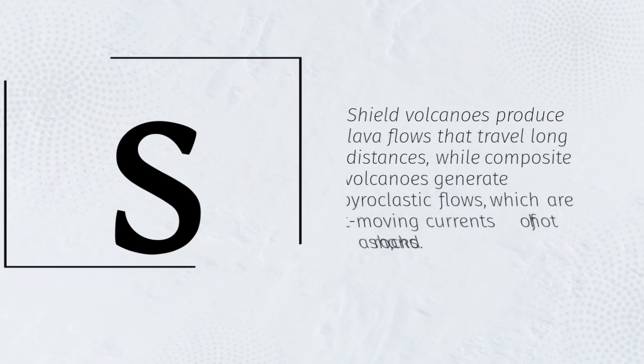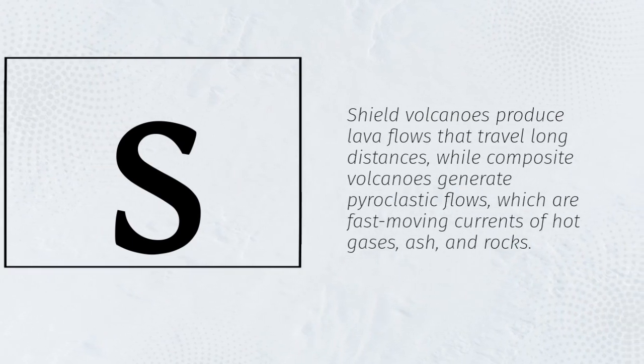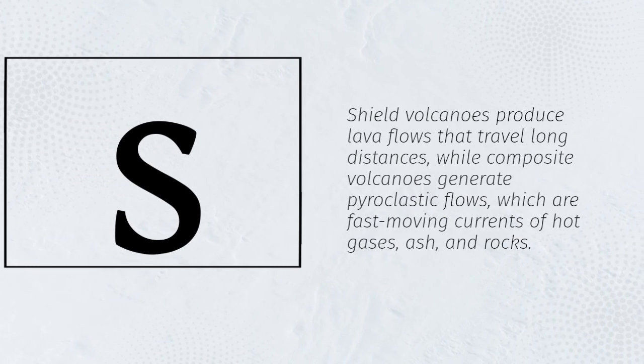Shield volcanoes produce lava flows that travel long distances, while composite volcanoes generate pyroclastic flows, which are fast-moving currents of hot gases, ash, and rocks.